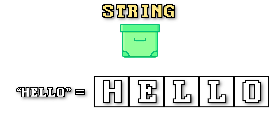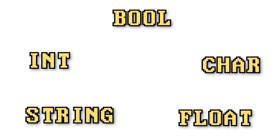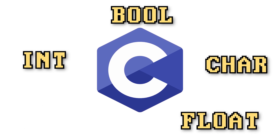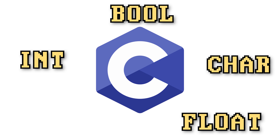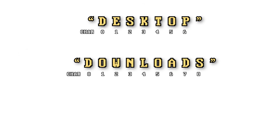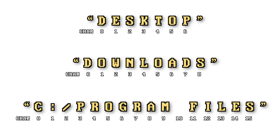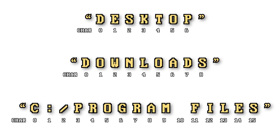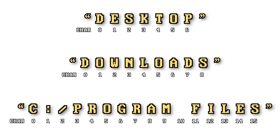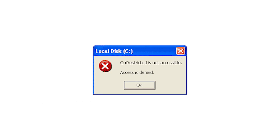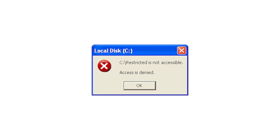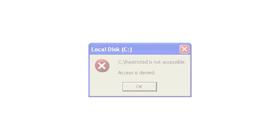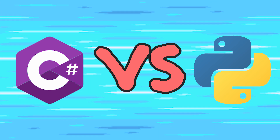Characters share a lot of overlap with the string data type because a string of characters is what makes up a string. In fact, way back in the early days of programming with the language C, strings didn't even exist as a data type — you instead had to create an array of characters. Strings like desktop paths and file directories are all a series of characters that computers use on a daily basis. Characters play an essential role for computers to communicate and relay information to us.